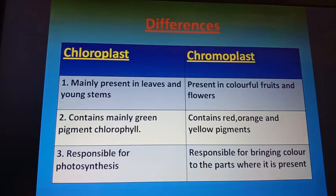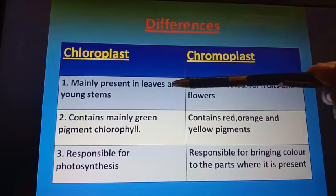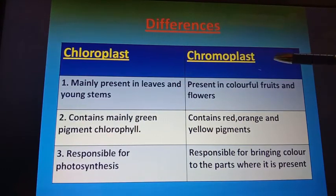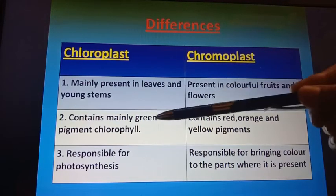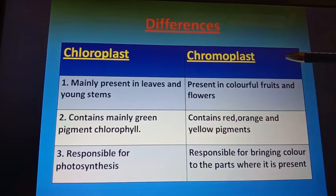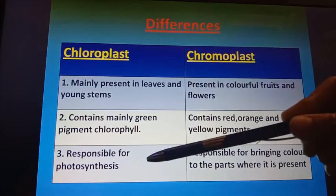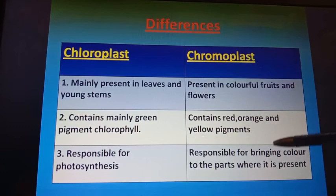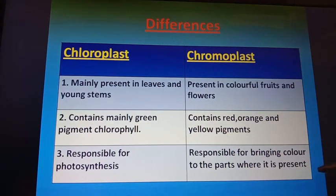The difference between chloroplasts and chromoplasts: chloroplasts are mainly present in leaves and young stems; chromoplasts are mainly present in colorful fruits and flowers. Chloroplasts contain the green pigment chlorophyll; chromoplasts contain red, orange, and yellow pigments. Chloroplasts are responsible for photosynthesis; chromoplasts are responsible for bringing color to the parts where they are present.